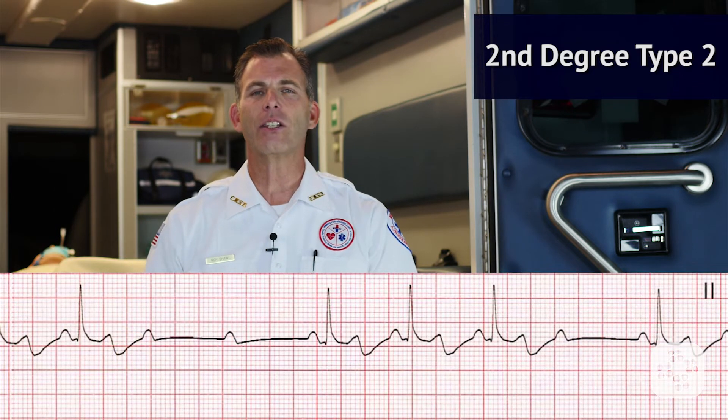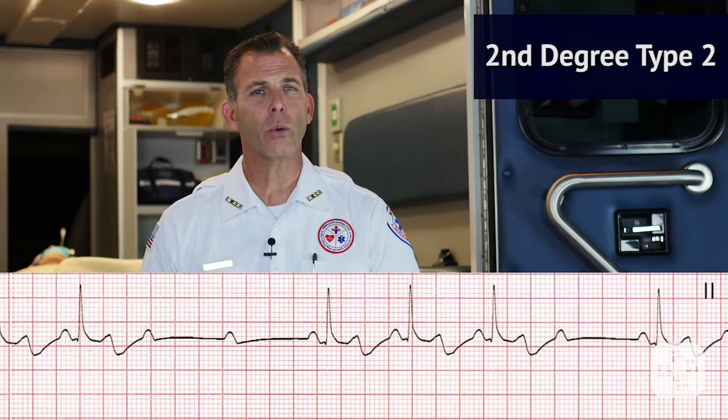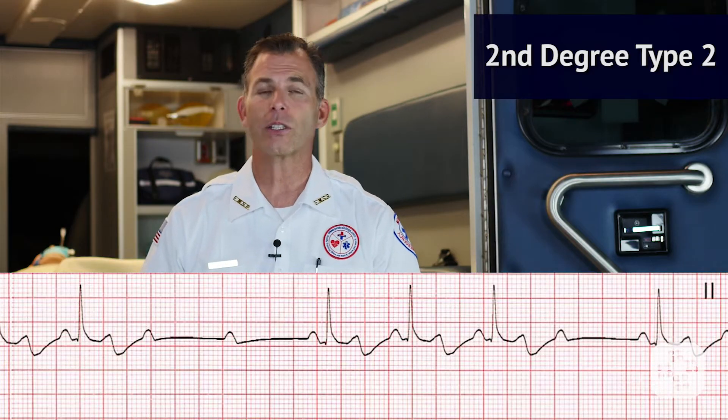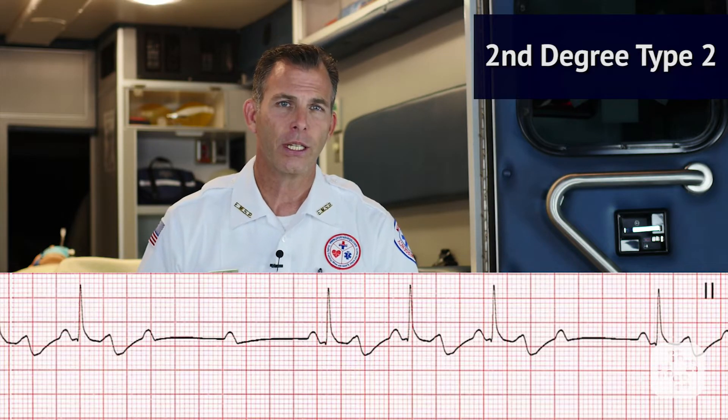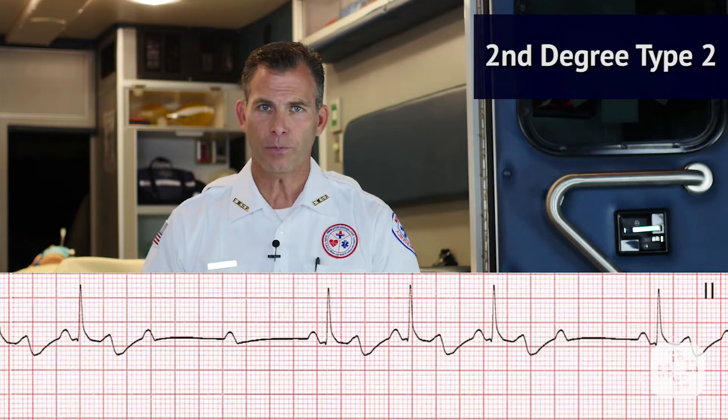The third type is called second degree Mobitz Type 2 and usually occurs when the heart block is below the AV node. Characteristically, the ECG appears to have intermittent blocks where some P waves do not have QRS complexes following them. There is no elongation of the P to R interval.